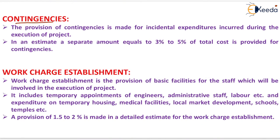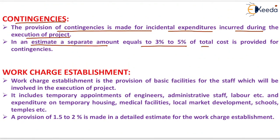Contingencies are provisions made for incidental expenditures incurred during the execution of a project. In an estimate, a separate amount equal to 3 to 5 percent of the total cost is provided for contingencies, to account for unexpected increases in the cost of certain items.